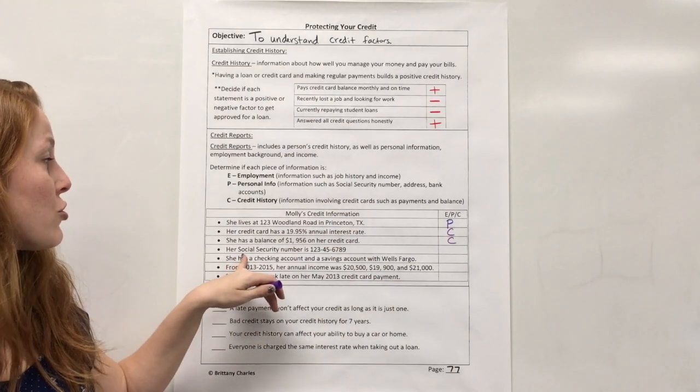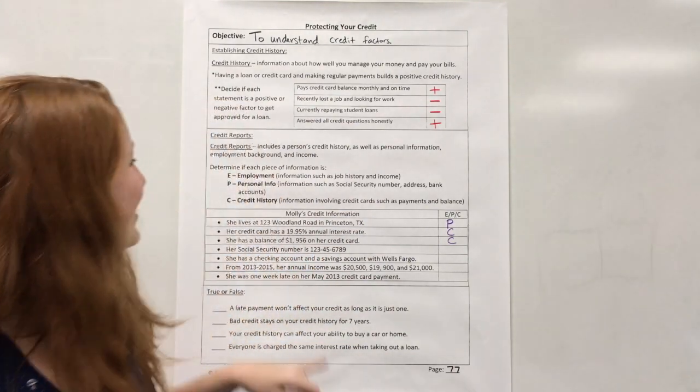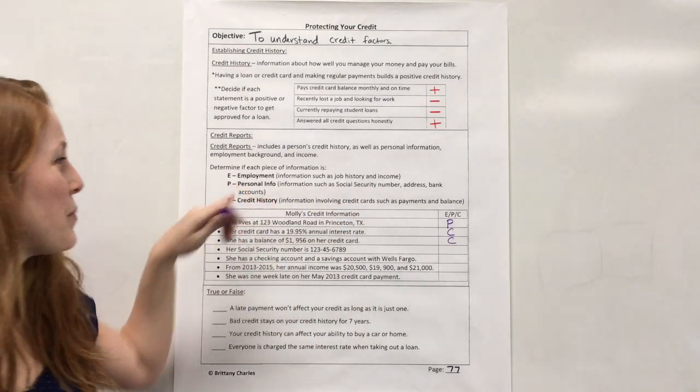All right. Her social security number is 1, 2, 3, 4, 5, 6, 7, 8, 9. And social security number would be under personal.